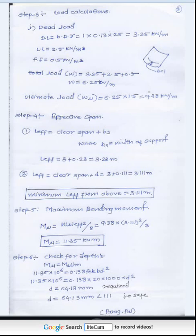Step 5: Maximum bending moment. The maximum bending moment is calculated using Mu = W × L_eff² / 8. Substituting the ultimate load and effective span, we get the maximum bending moment Mu = 11.35 kNm/m.